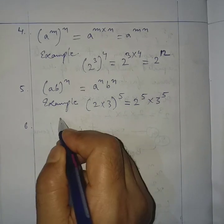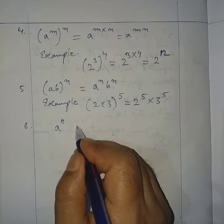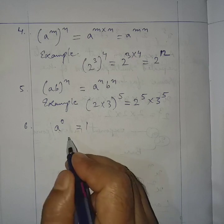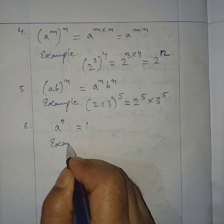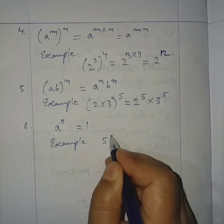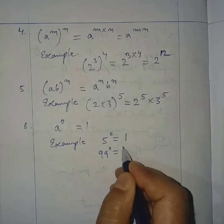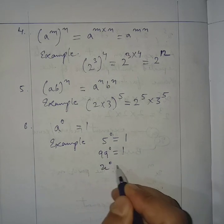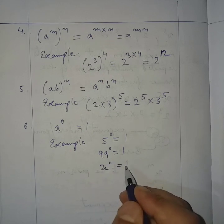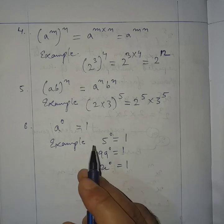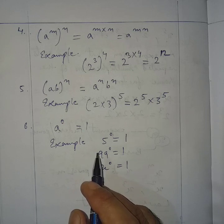Law number 6: a to the power 0 equals 1. Anything to the power 0 is equal to 1. For example, 5^0 = 1, 99^0 = 1, and x^0 = 1. So my dear students, list these laws of indices on paper and learn them.